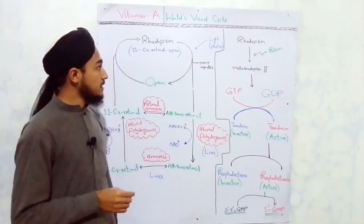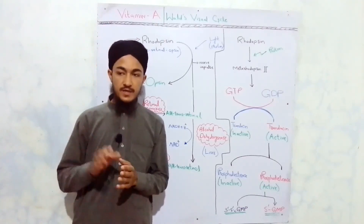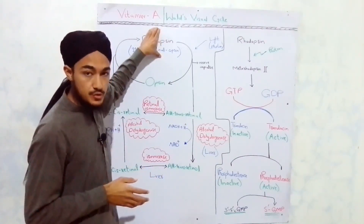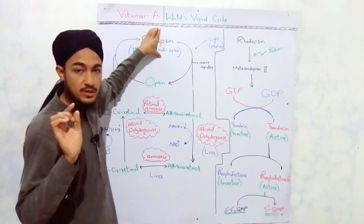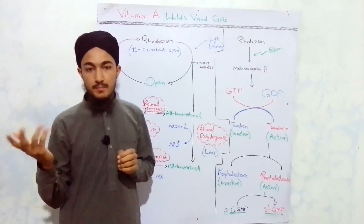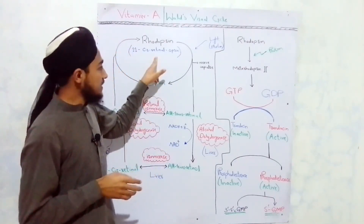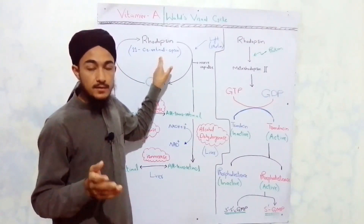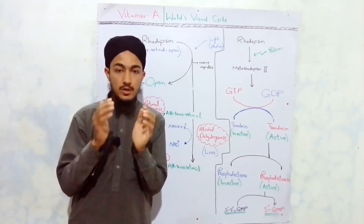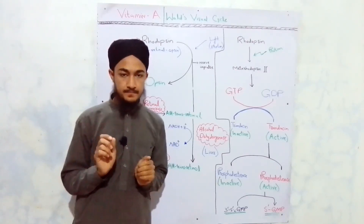One important concept related to the visual cycle is dark adaptation time. When a person shifts from a very bright environment into dim light, the stores of rhodopsin in their retina are depleted and vision is temporarily impaired. The person cannot see for a couple of seconds or up to one or two minutes. After that time, rhodopsin is resynthesized and vision improves. That specific time period is called the dark adaptation time.